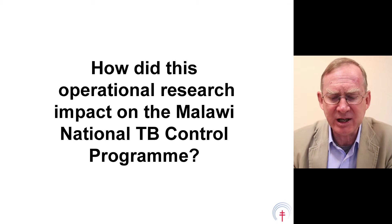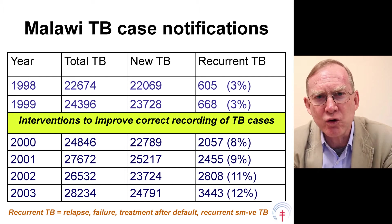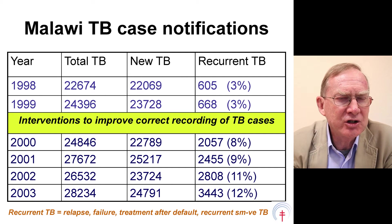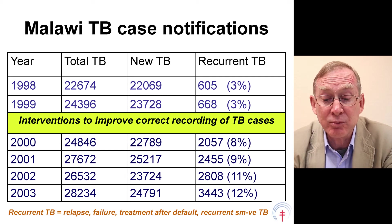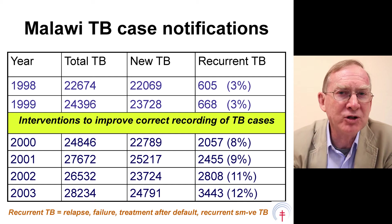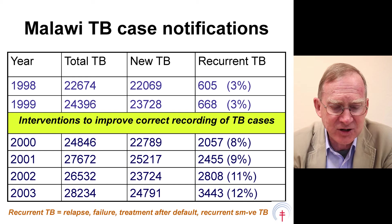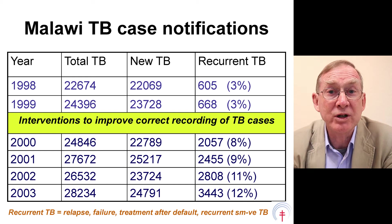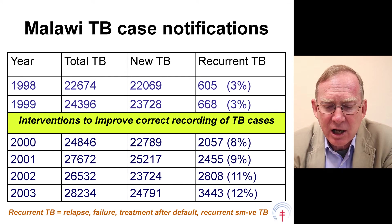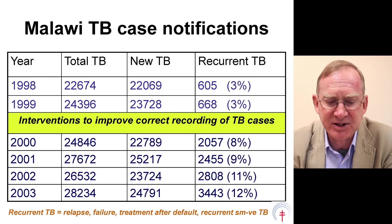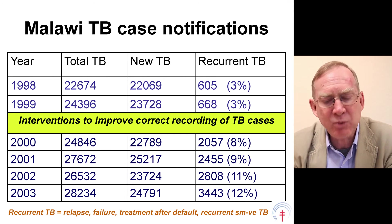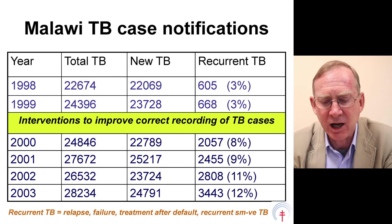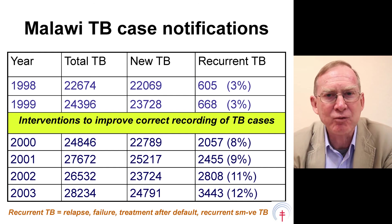How did this impact on our national TB control program? Our data became truer and more accurate. The proportion of patients with recurrent tuberculosis in 1998 and 1999 was 3%. Following interventions to improve recording, in 2000 we immediately went up to 8% of patients with recurrent tuberculosis. Gradually over four years, this proportion reached 12%, where it plateaued — probably an accurate representation of what is going on in Malawi. About 12% of all patients registered nationally have recurrent tuberculosis.